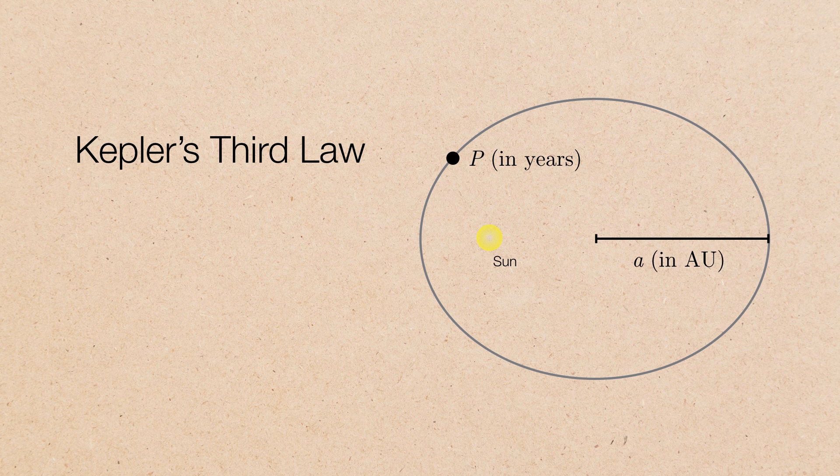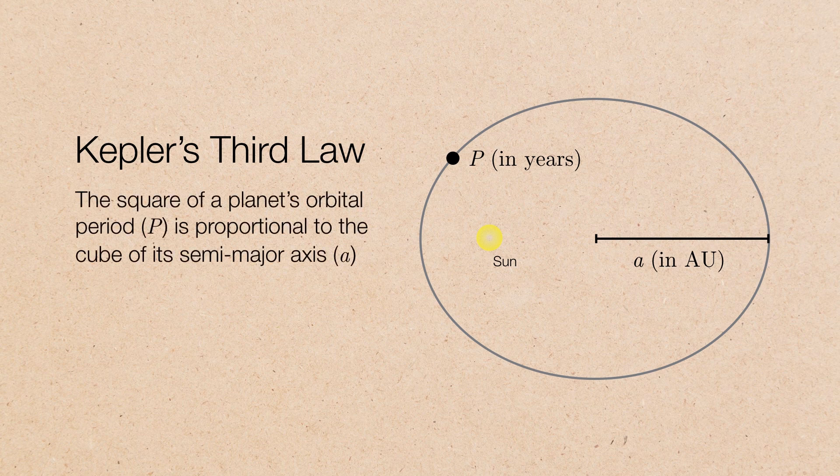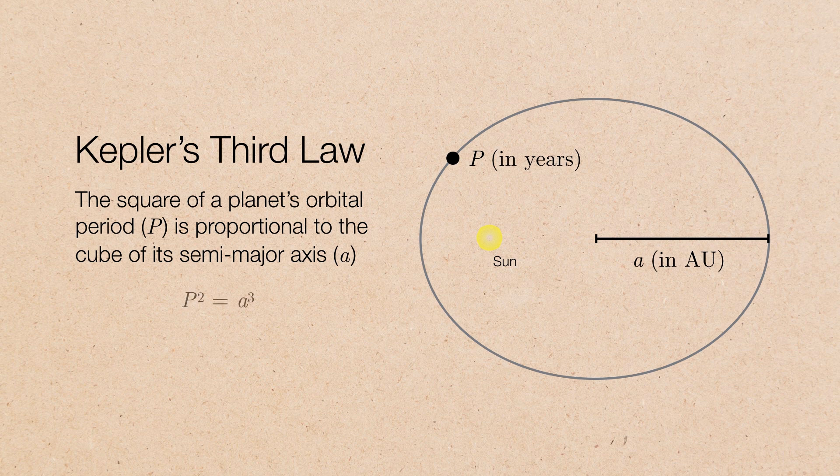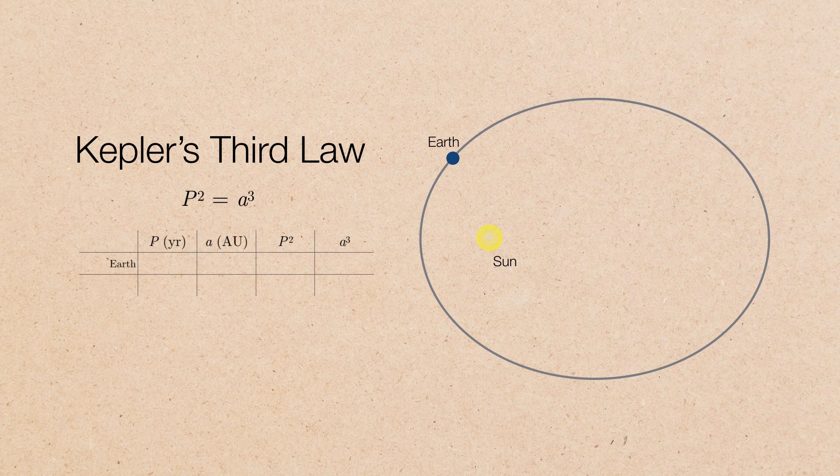Kepler's third law showed us a relationship between the orbital period of a planet when measured in years and its semi-major axis when measured in astronomical units. And it turns out that the relationship is pretty simple. The square of the planet's orbital period is proportional to the cube of its semi-major axis. In other words, the orbital period squared is equal to its semi-major axis cubed.